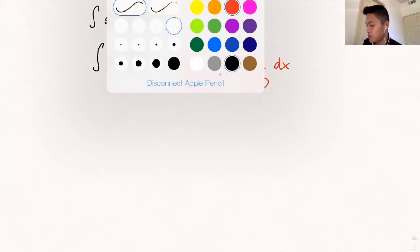Now you're probably wondering how on earth does this possibly help me, because it looks more complicated. But let's just distribute the terms and see what we get. So if we continue the integration, we get secant squared of x.